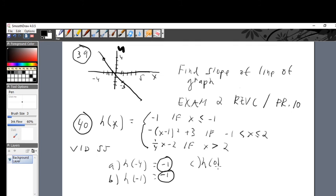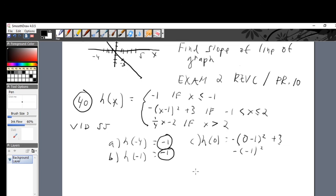Part C: what is H(0)? Where's H(0)? Between -1 and 2. H(0), we follow this direction: -(0-1)² + 3. That's -(-1)² + 3, which equals -1 + 3, which is equal to 2. There's the final answer, there's C.